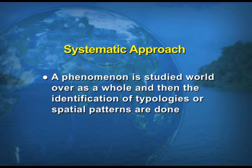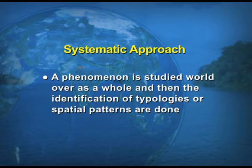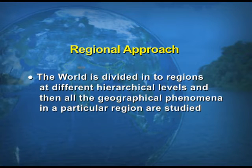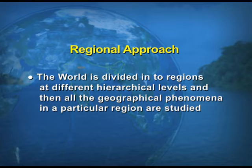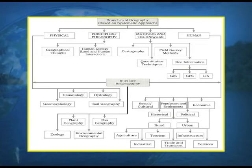In the systematic approach, a phenomenon is studied world over as a whole, and then identification of typologies or spatial patterns is done. In the regional approach, the world is divided into different regions at different hierarchical levels, and then all the geographical phenomena in a particular region are studied.